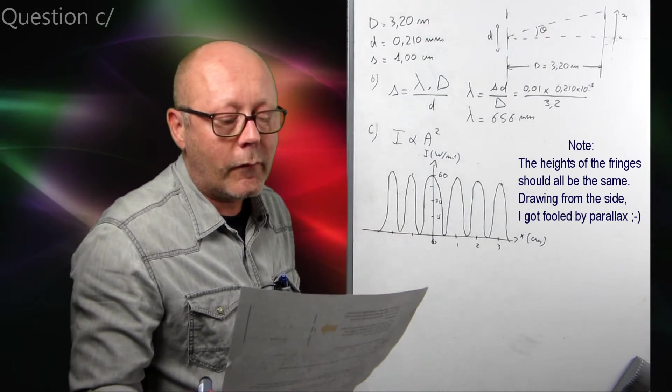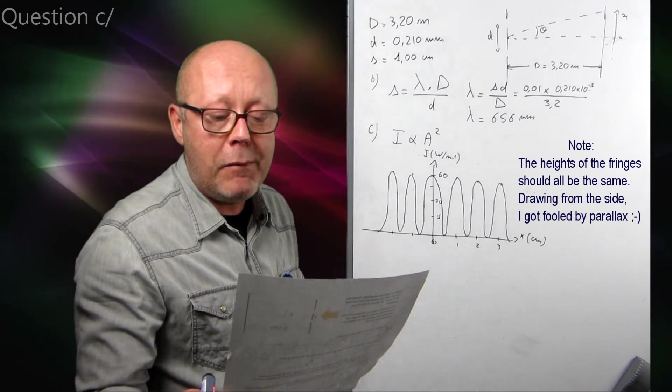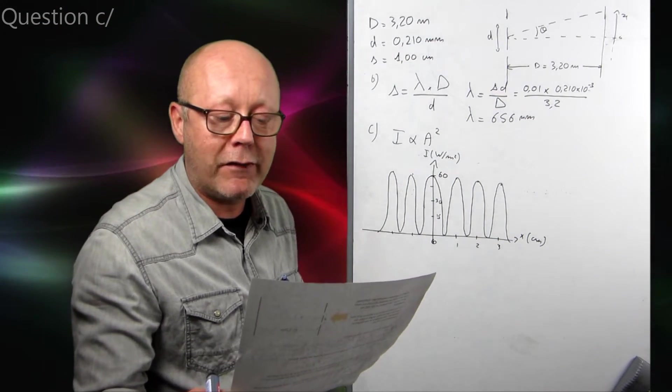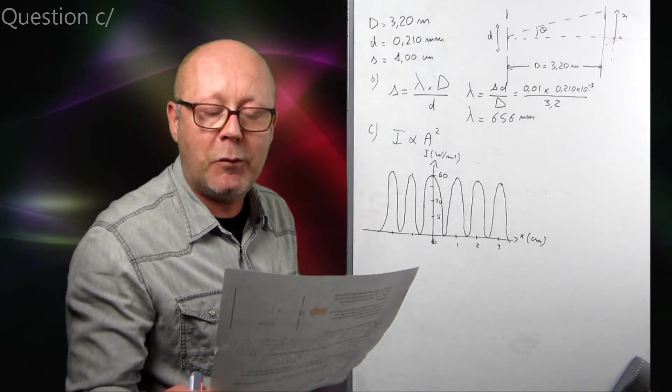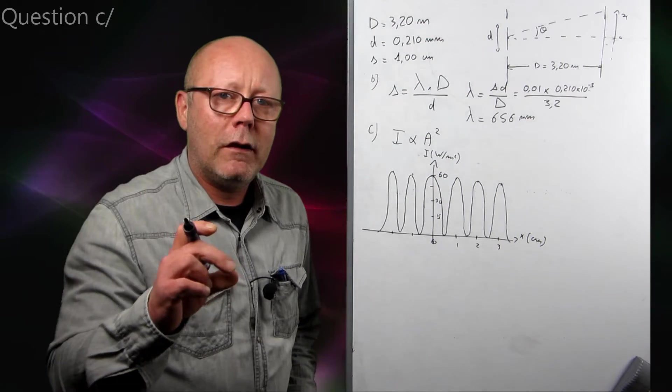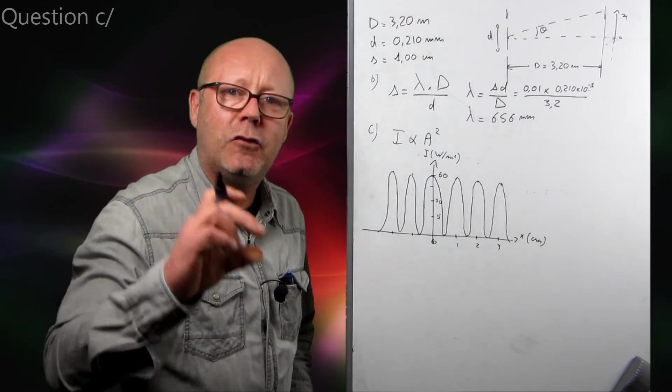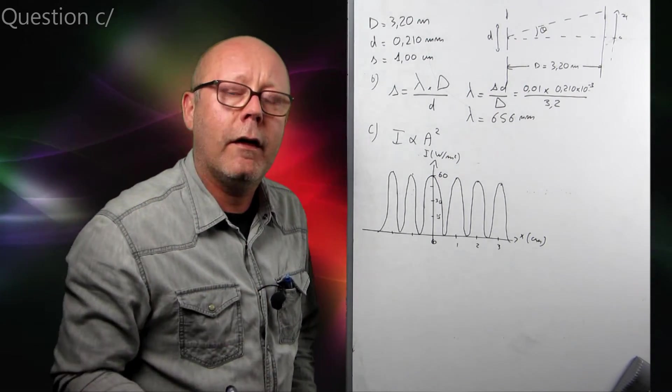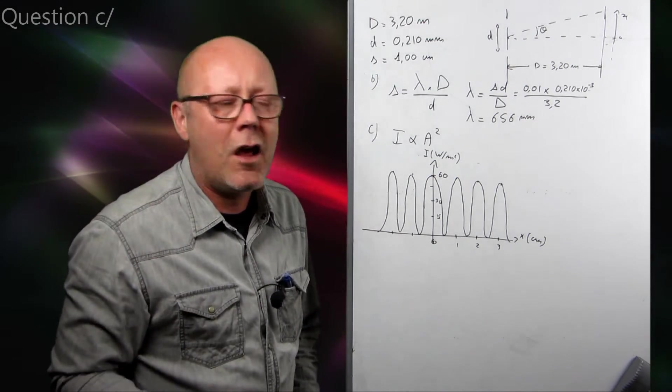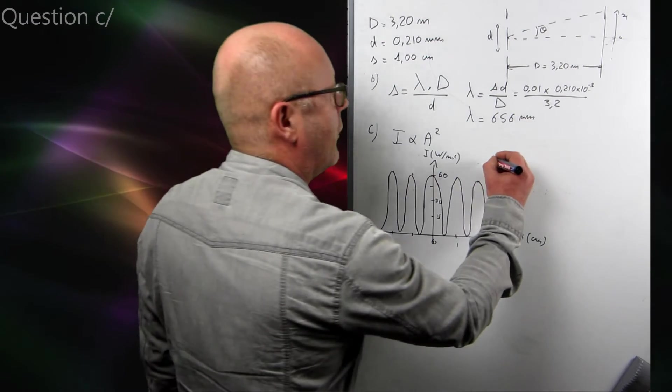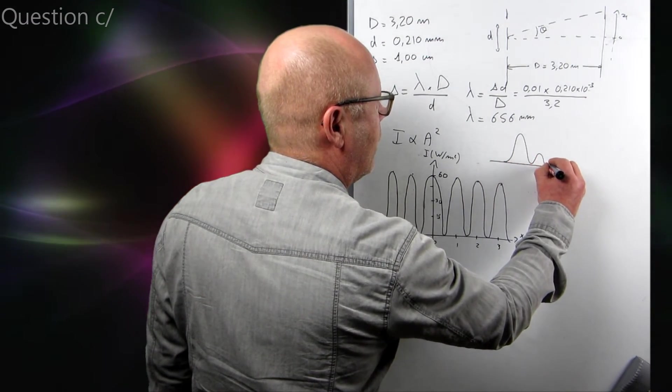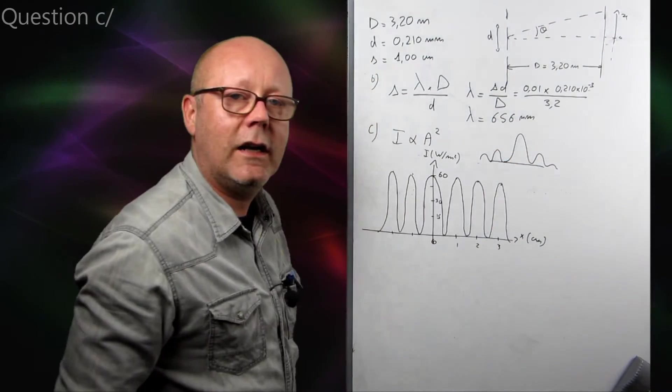Question D. The two slits are now replaced with two slits of non-negligible width. Sketch another graph of the interference pattern that will be observed on the screen. Two marks. Well, now, if I have slits which are not of negligible width, that mean I can get diffraction patterns from each of the slits. Remember the shape of a diffraction pattern. It's something like this.